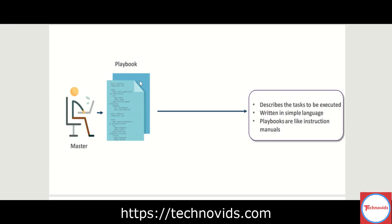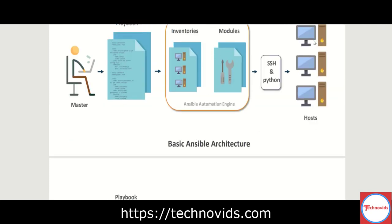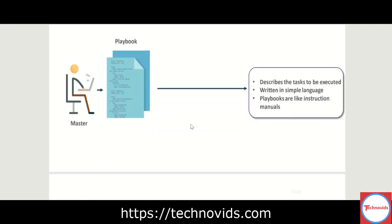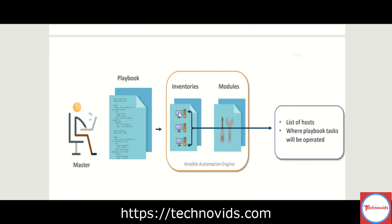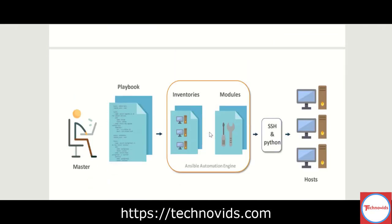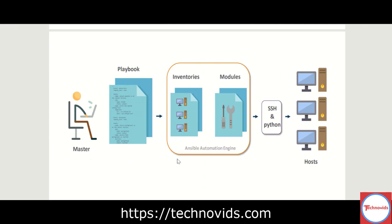In summary, playbooks contain the tasks to be executed in host machines — they are like instruction manuals describing exactly what you want to perform. They are written in a simple language. The inventory file has the list of hosts where you want to run the playbook. Playbooks, inventory files, and modules all reside together on the Ansible master machine. This is the basic architecture of how Ansible works.